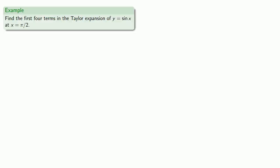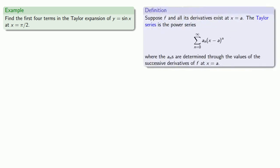Let's find the first four terms in the Taylor expansion of y equals sine of x at x equals π over 2. We assume that sine of x is a Taylor series expansion centered around x equals π over 2.